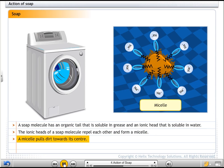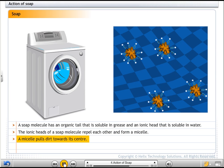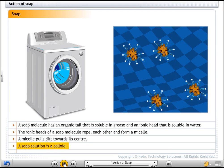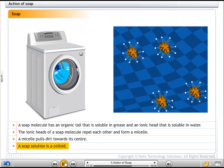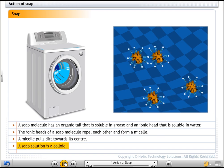The dirt is pulled and absorbed into the center of the micelle. This property of soap makes it an emulsifier. The micelles stay in solution as a colloid and do not come together to precipitate because of ion-ion repulsion.